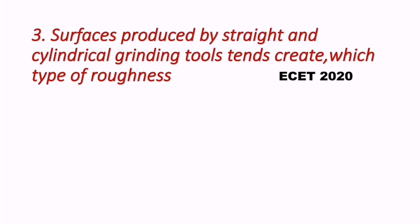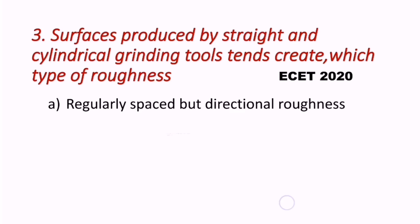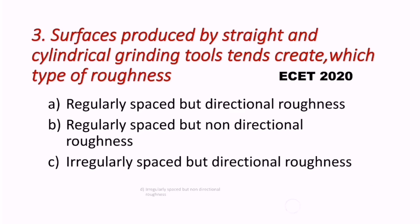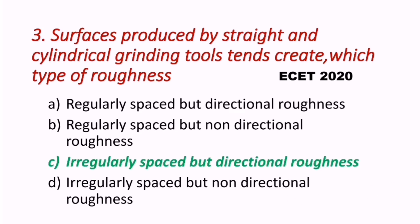Third question, which came in ESET 2020: Surfaces produced by straight and cylindrical grinding tools tend to create which type of roughness? The correct answer is C — irregularly spaced but directional roughness. Cylindrical grinding tools create irregularly spaced but directional roughness.